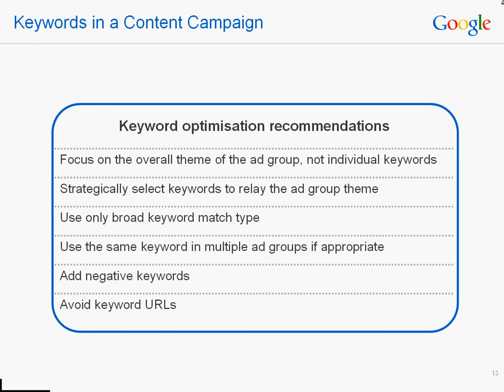How should we select keywords to achieve various methods of contextual targeting? It's important to focus on an overall theme for your ad group, not individual keywords. Content ad placement is attributed to a concept derived from all the terms in your ad and keyword list as a whole — it does not attribute ad placement to a single keyword alone. When creating keywords, it's unnecessary to add keywords in phrase or exact match. The system reads all keyword match types as broad match, so just stick with broad match.